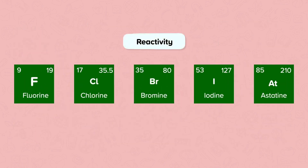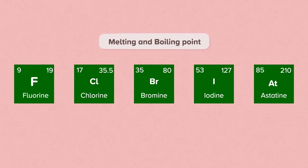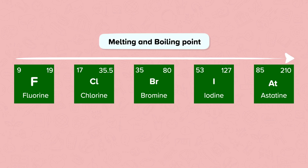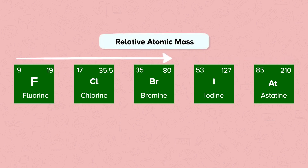The reactivity of Group 7 elements increases as you go up the group — the elements become less reactive as you go down. The melting and boiling points increase as you go down the group. The relative atomic mass also increases as you go down the group.